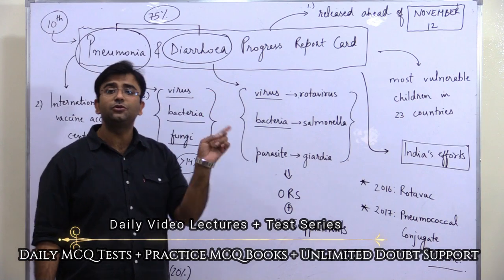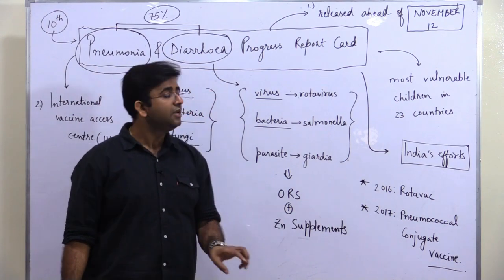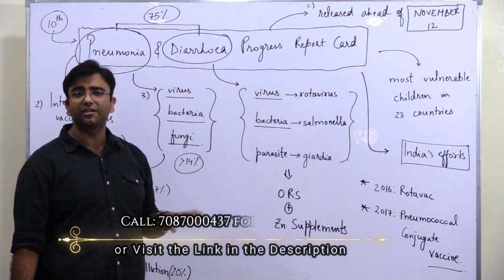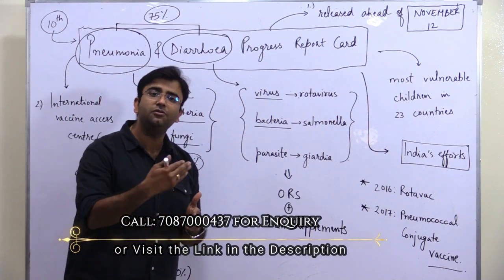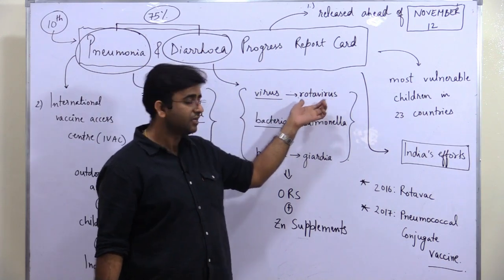Diarrhea results in dehydration, and dehydration may result in ultimate death. Now, the causes of diarrhea: it can be caused by multiple reasons, for example virus such as rotavirus.